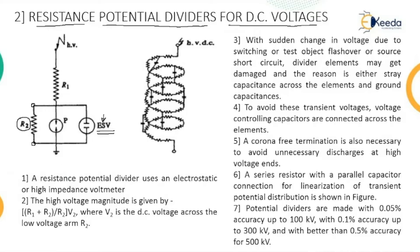A resistance potential divider uses either an electrostatic or high impedance value voltmeter. The high voltage magnitude is given by the equation: (R1 + R2) / R2 multiplied by V2. This means whatever voltage we have to measure, it is applied across this terminal — a high DC voltage is applied to this particular terminal, and we get the voltage with respect to the ground terminal.